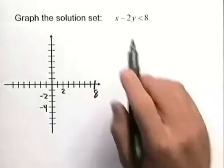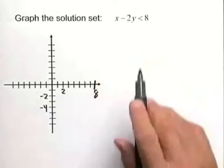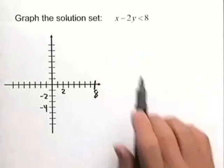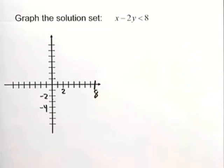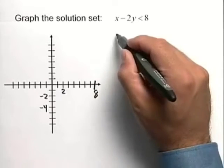Here's an example of graphing a linear inequality. We have x minus 2y is strictly less than 8. We're looking for the infinite number of ordered pairs x comma y such that those are less than 8. So let's go ahead and graph this.